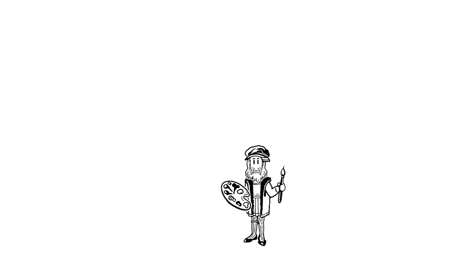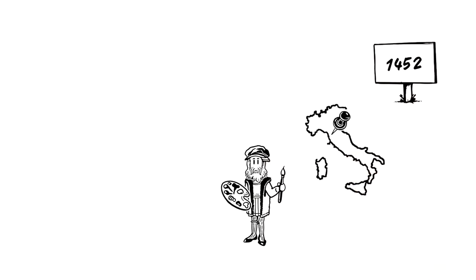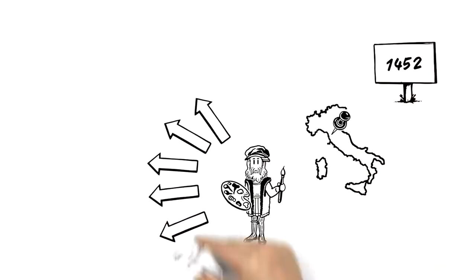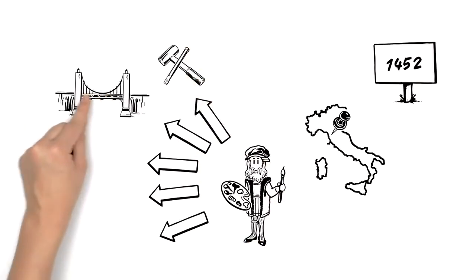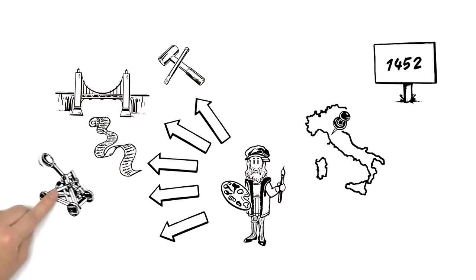The celebrated painter and inventor was born in 1452 in Vinci, Italy, and those were only two of his many talents. He was also a sculptor, architect, philosopher, engineer, and scientist.